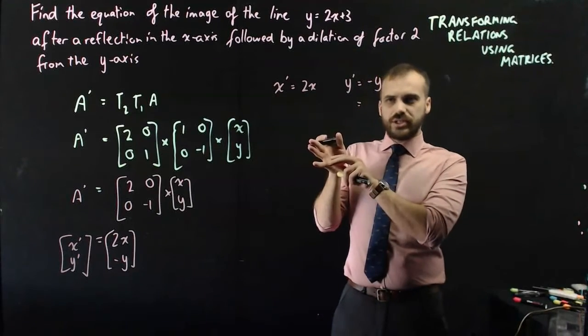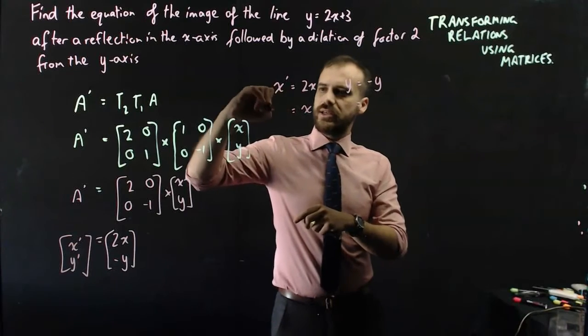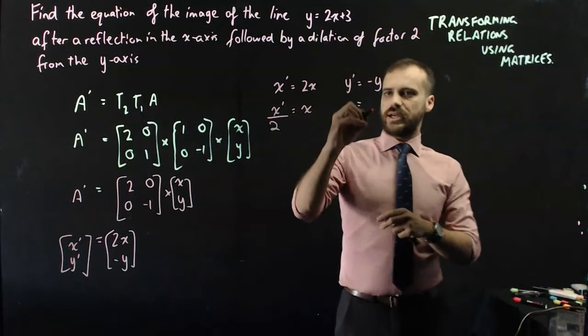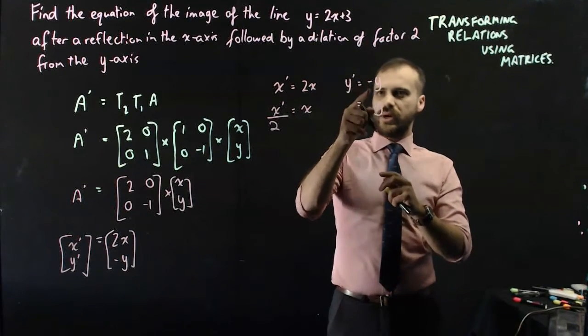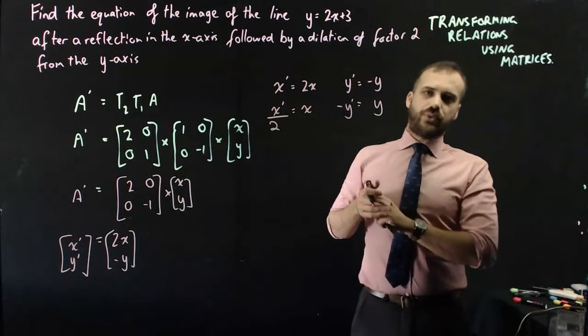Now if I rearrange that a little bit to make x your subject, I can say that x is equal to the image of x divided by 2, and I can say that y is equal to, multiply both by negative 1, y is equal to negative the image of y.